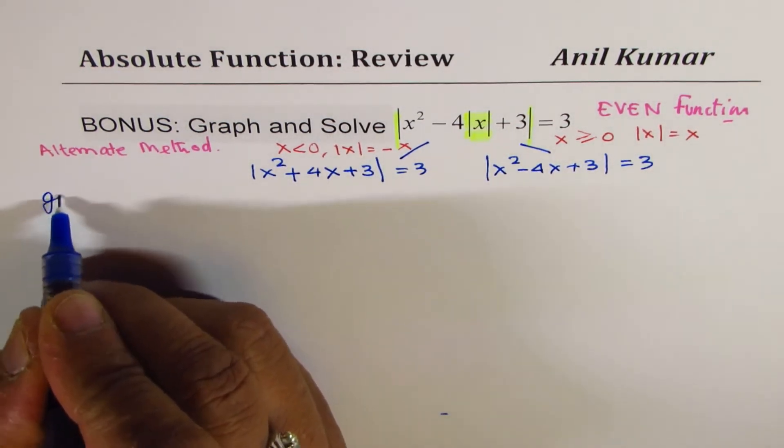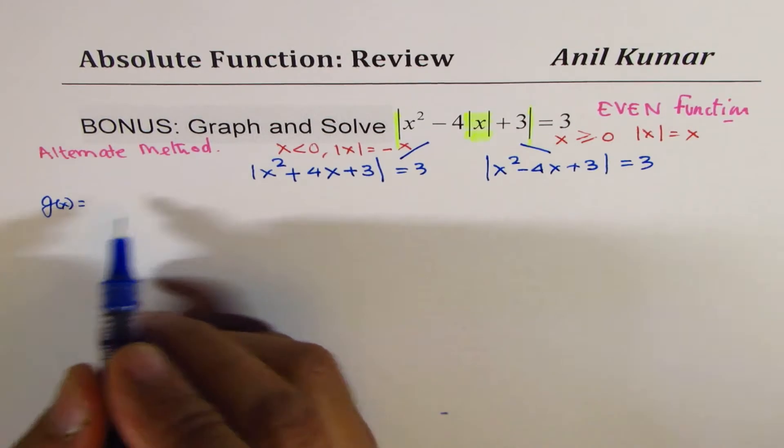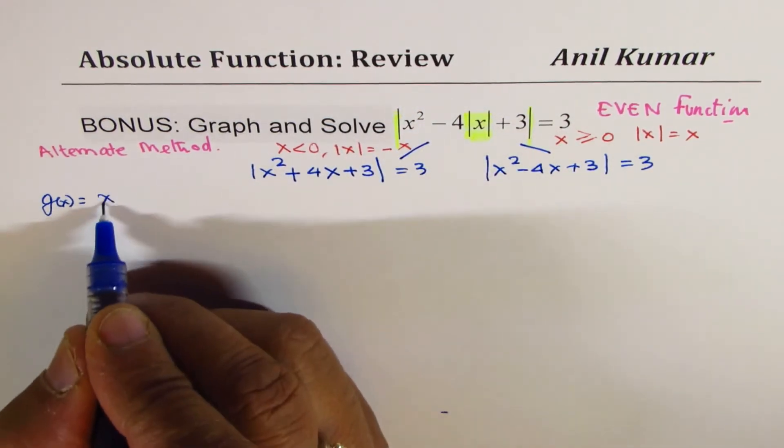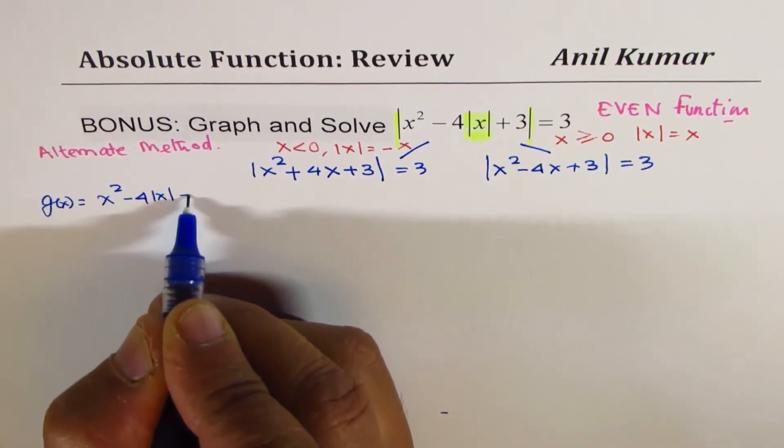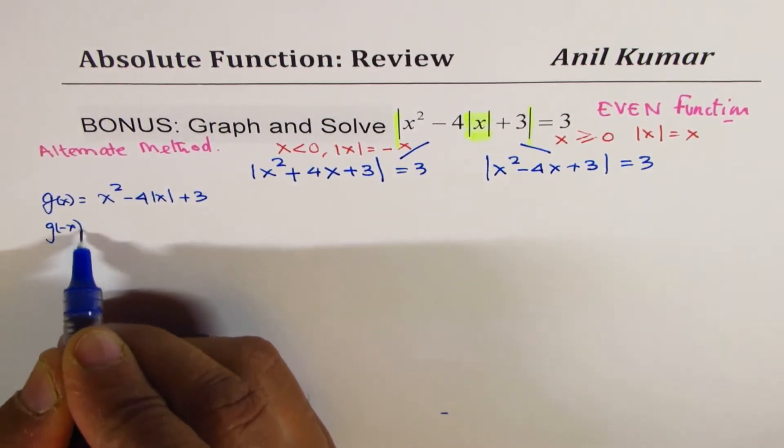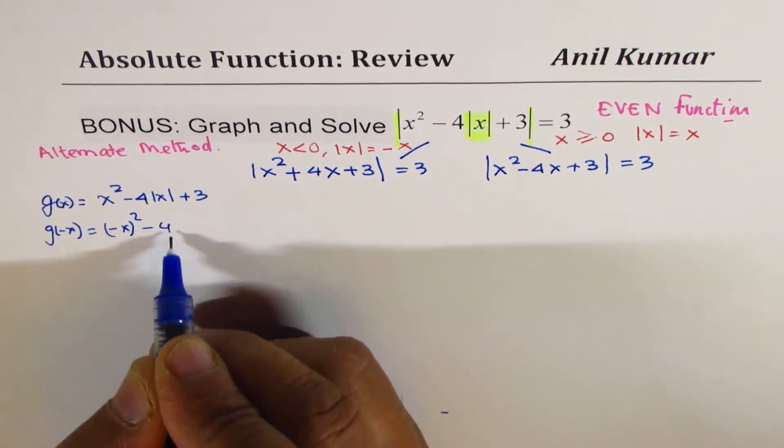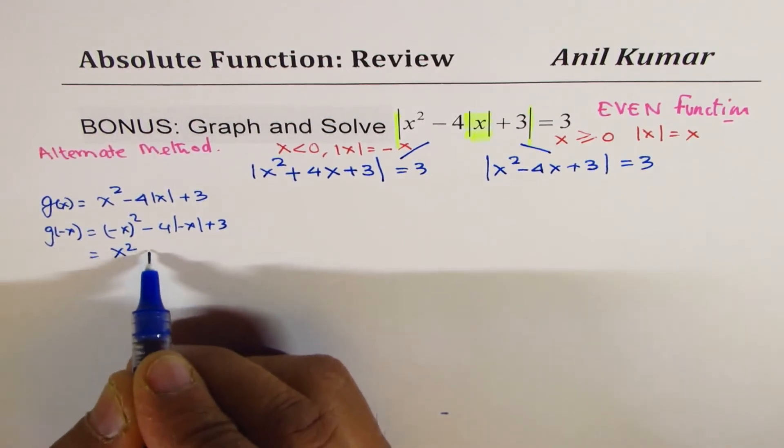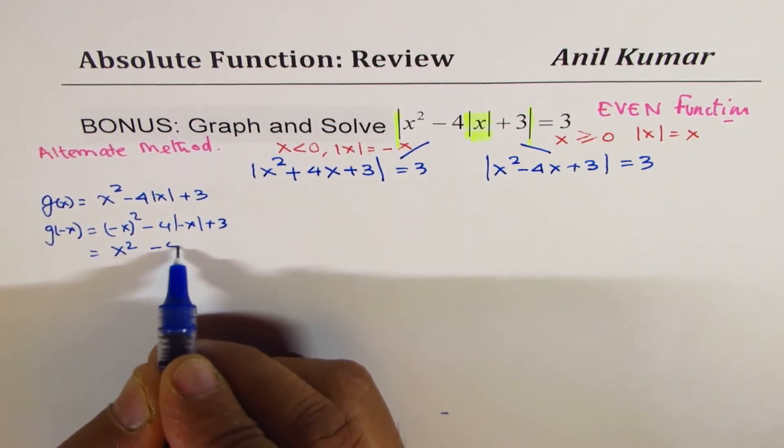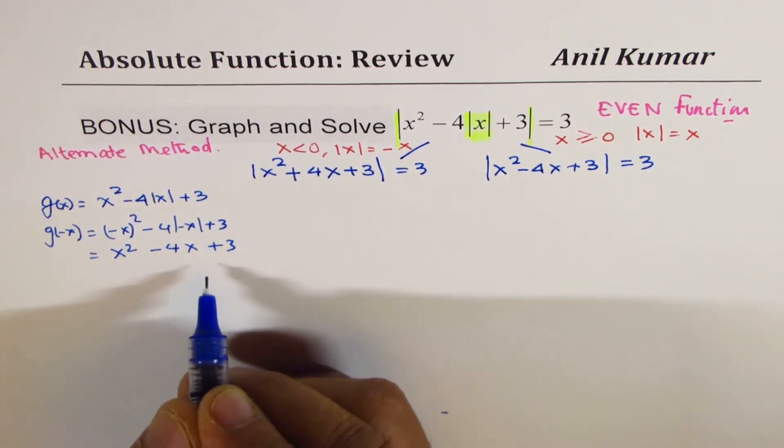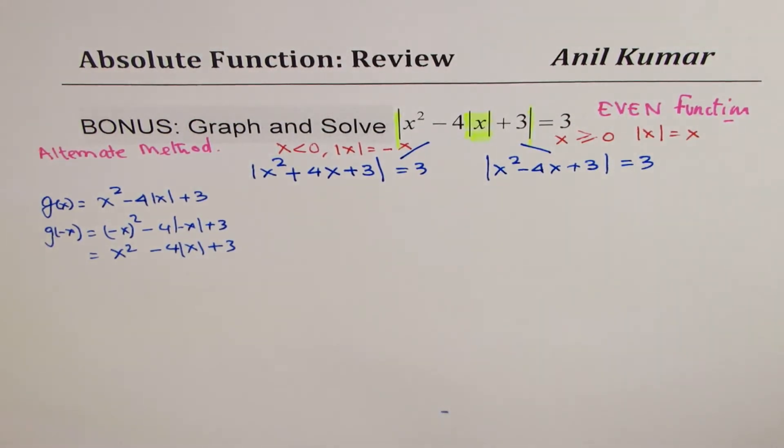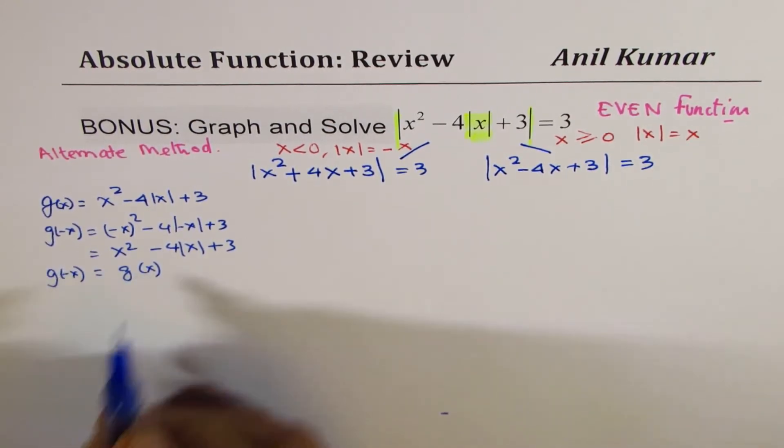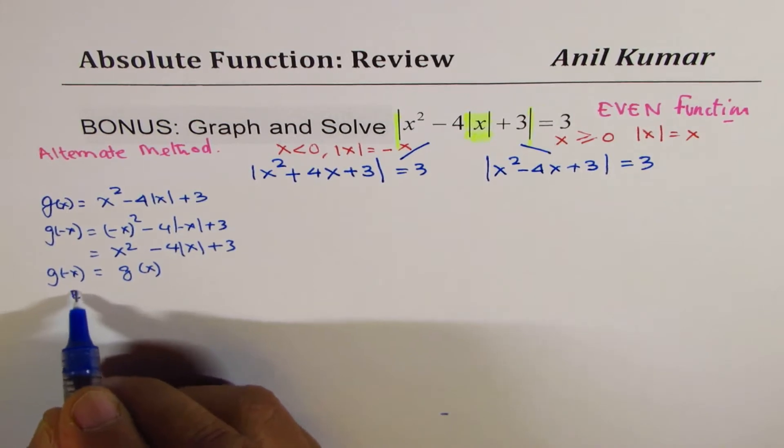So let me write this function as g of x is equal to, so I'll just consider the inside part, which is x squared minus 4 absolute x plus 3. What is g of minus x? So if I replace x with minus x, I get this. Perfect. Now, square of negative is positive. And absolute value of negative is also positive. So we get same thing, 4x plus 3. Now, this is exactly equal to g of x. Now, since g of minus x is equal to g of x, it means it is an even function.